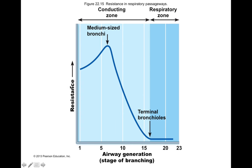Resistance changes across your airway — your lower respiratory tract has a conducting zone and a respiratory zone. The conducting zone includes your larynx, trachea, bronchi, and larger bronchioles; the respiratory zone starts at the respiratory bronchioles, alveolar ducts, and alveoli. Resistance decreases over the length of the airway beyond the medium-sized bronchi, so airflow increases in the distal conducting zone. Resistance is actually very low in the respiratory zone, so we get a lot of airflow there.